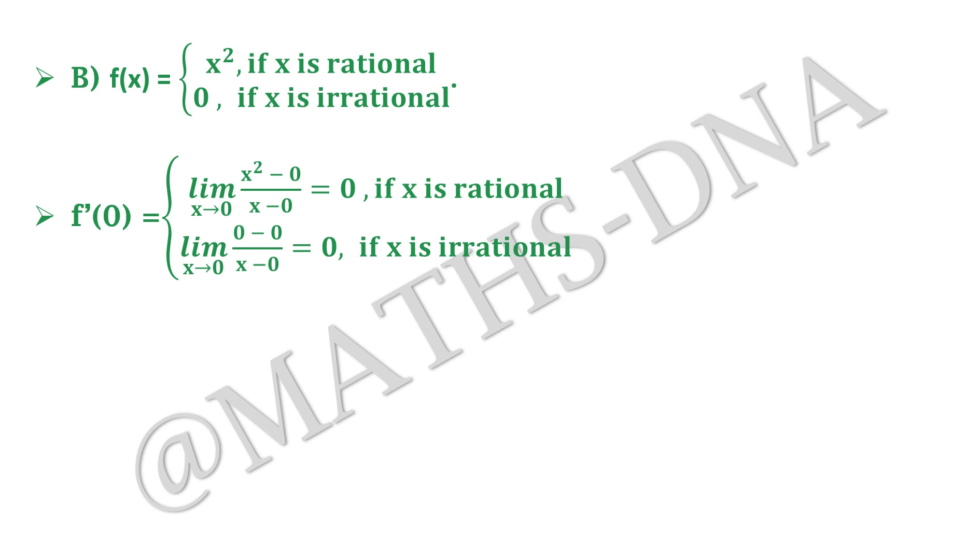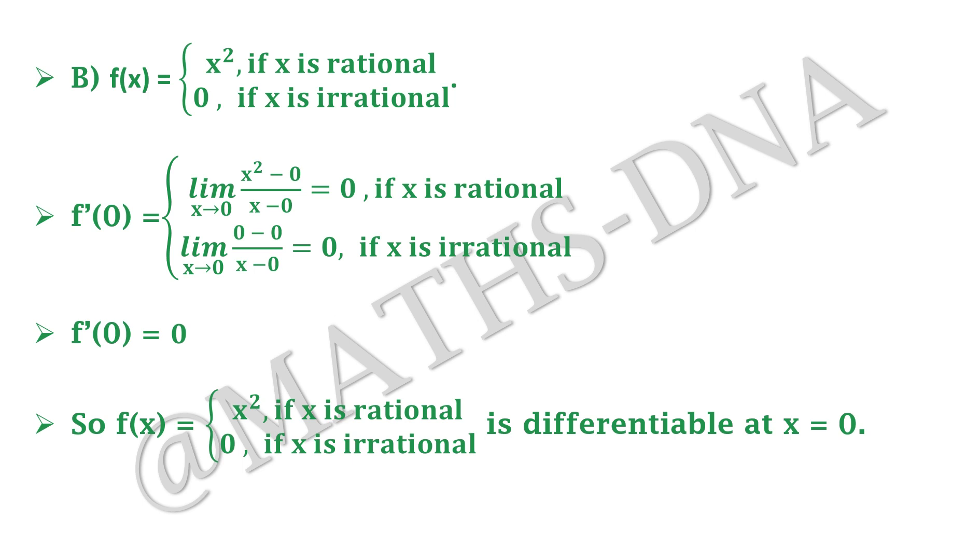Similarly, for limit x tends to 0 of [0 minus 0] upon [x minus 0], that is again equals 0 if x is irrational. Now you can apply L'Hôpital's rule over here and verify it. This gives us that f'(0) is again equals 0, which implies that option B, that is f(x) equals x square if x is rational and 0 if x is irrational, is also differentiable at x equals 0.